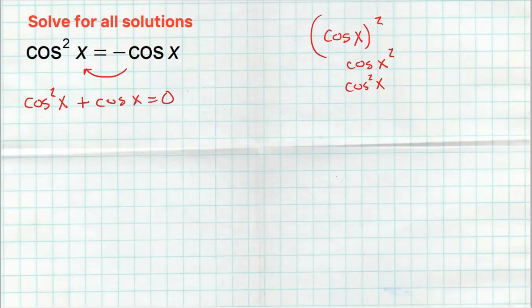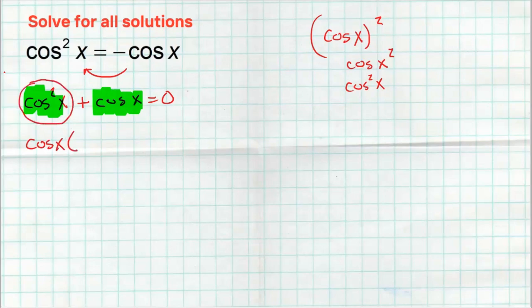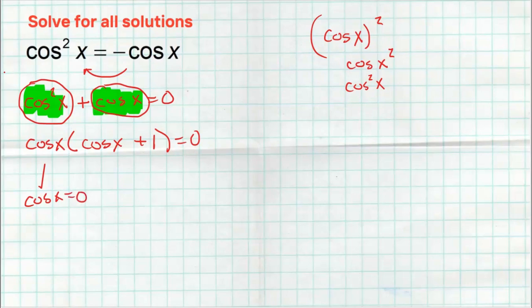Now I can factor. I have two terms. What do both terms have in common? They both have a cosine of x. So when I factor — dividing away from this first term — cosine squared divided by cosine leaves us with cosine of x. From the second term, cosine divided by cosine leaves us with one. So using the zero product property: either cosine of x equals zero, or cosine of x plus one equals zero.